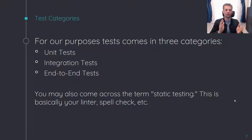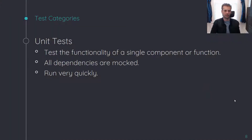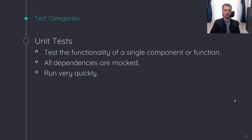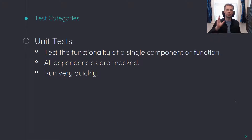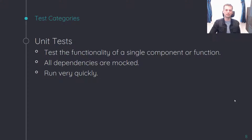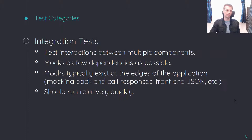Let's focus on these first three categories. Unit tests are testing the functionality of a single component or function. All of the dependencies are mocked — anything else that this component needs in order to function is going to be mocked. You're not going to be pulling in any other modules. These tests are going to be the fastest running tests in your code base.